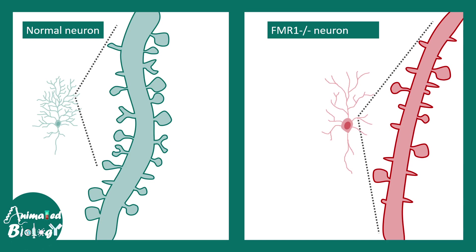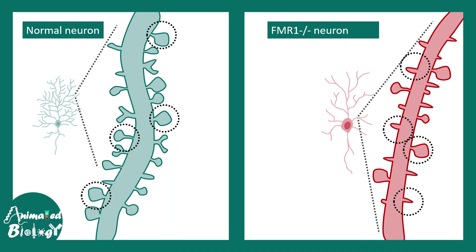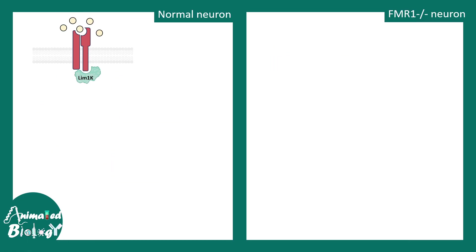Delving deeper into neuronal insights: a normal neuron has multiple dendritic spines with mushroom-like protrusions known as mushroom spines, which form mature and functional synapses. However, in FMR1 knockout neurons in mouse models, these synapses are often immature and dysmorphic in shape, and this has a lot to do with how synapses are formed and how synaptic plasticity is altered.